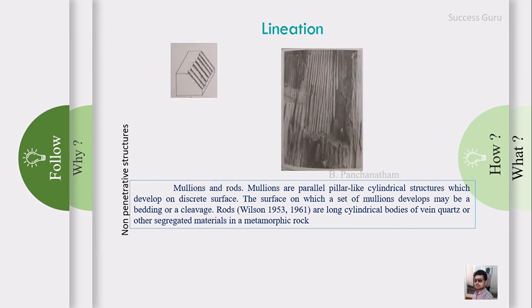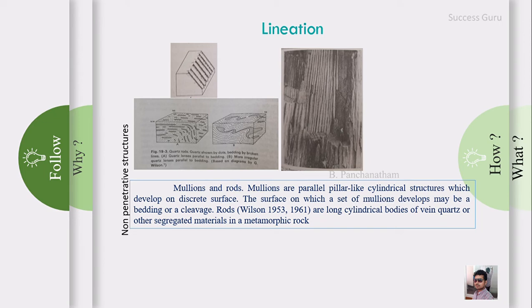Now we will see non-penetrative structures. The first one is mullions and rods. Mullions are parallel pillar-like cylindrical structures which develop on a discrete surface. You can see mullions in the image and in the field - this is almost a vertical mullion. The surface on which mullions develop may be a bedding or cleavage plane, and breaking or buckling takes place along the surface to form mullions. Rods, according to Wilson (1953-1961), are long cylindrical bodies of vein quartz or other segregated minerals in metamorphic rocks that show rod-like structure.